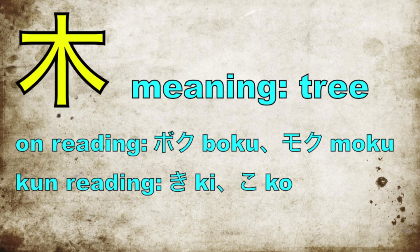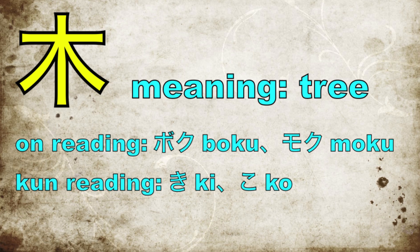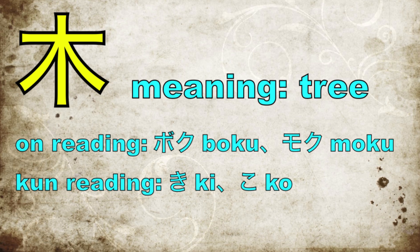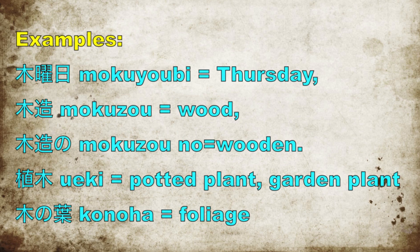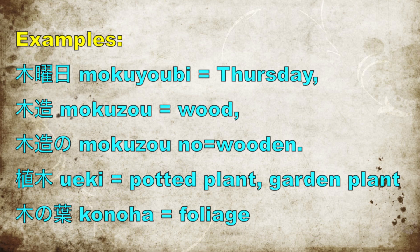It has two onyomi pronunciations: boku and moku. The kunyomi reading is ki or ko, though ko is fairly rare. Here are some examples: mokuyobi, which is Thursday; mokuzou, which is wood; mokuzou no — adding no is similar to apostrophe s — and that means wooden; ueki, which is potted plant or garden plant; and konoha, or foliage.